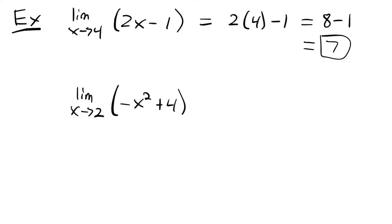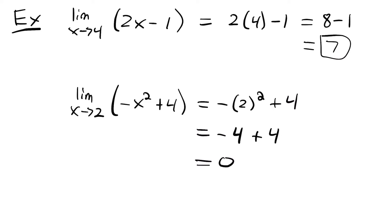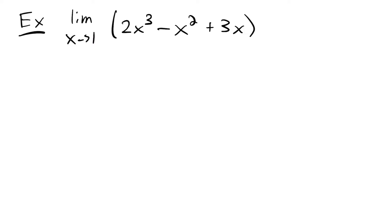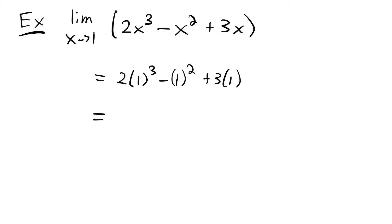For negative x squared plus 4, we can just plug in 2 and get our limit. So we'll have negative 2 squared plus 4, which equals negative 4 plus 4, which equals 0. Next, we look at the limit as x approaches 1 for 2x cubed minus x squared plus 3x. Plugging in 1, we get 2 times 1 cubed minus 1 squared plus 3 times 1, which reduces to 2 minus 1 plus 3, which equals 4.